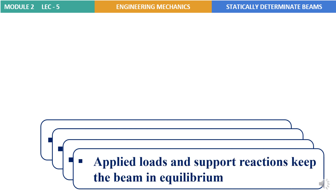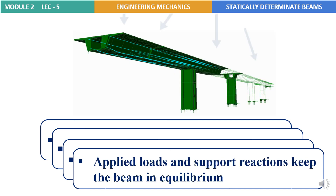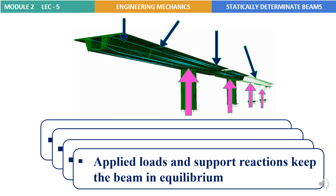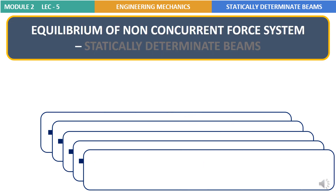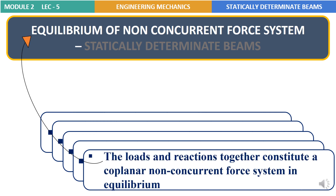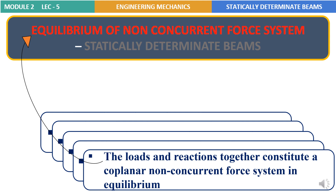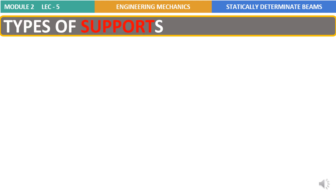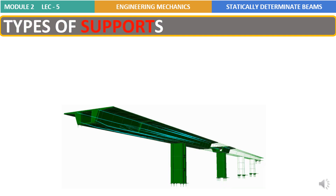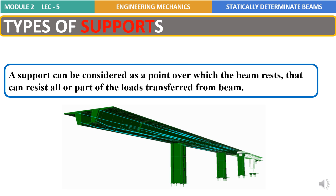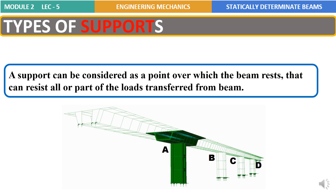Due to these applied loads and support reactions, the beam will remain in equilibrium. Finally, in a beam, the loads and reactions together constitute a coplanar non-concurrent force system in equilibrium. Next, before moving into the types of supports, let's understand the definition of a support. A support can be considered as a point over which the beam rests that can resist all or part of the loads transferred from the beam. In this example, A, B, C and D are the supported points and they represent the support to the beam.